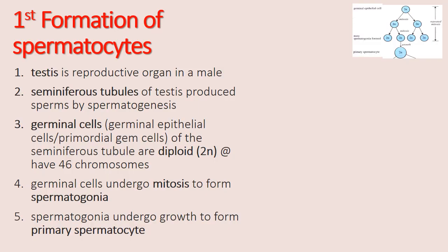Formation of the spermatocyte. First, the testis is the reproductive organ in a male, and within the testis we have the seminiferous tubules, which produce the sperm by spermatogenesis. Within the wall of the seminiferous tubules, we have the germinal cell, also known as germinal epithelial cells or primordial germ cells, which are diploid, represented by 2N, meaning this cell contains 46 chromosomes. This is the germinal cell of the seminiferous tubules.